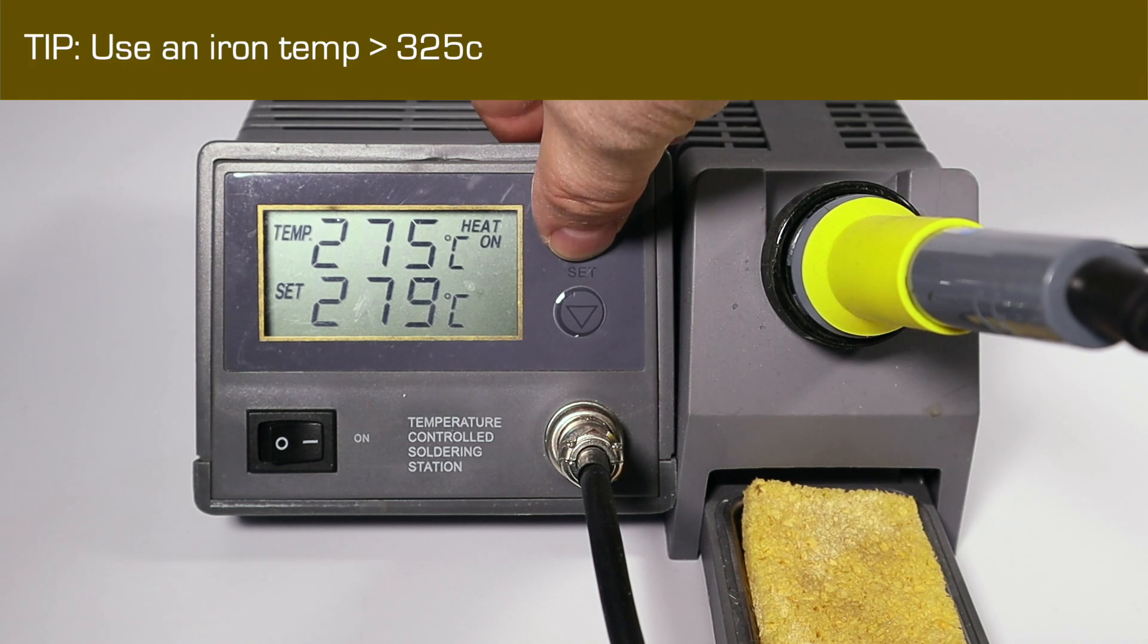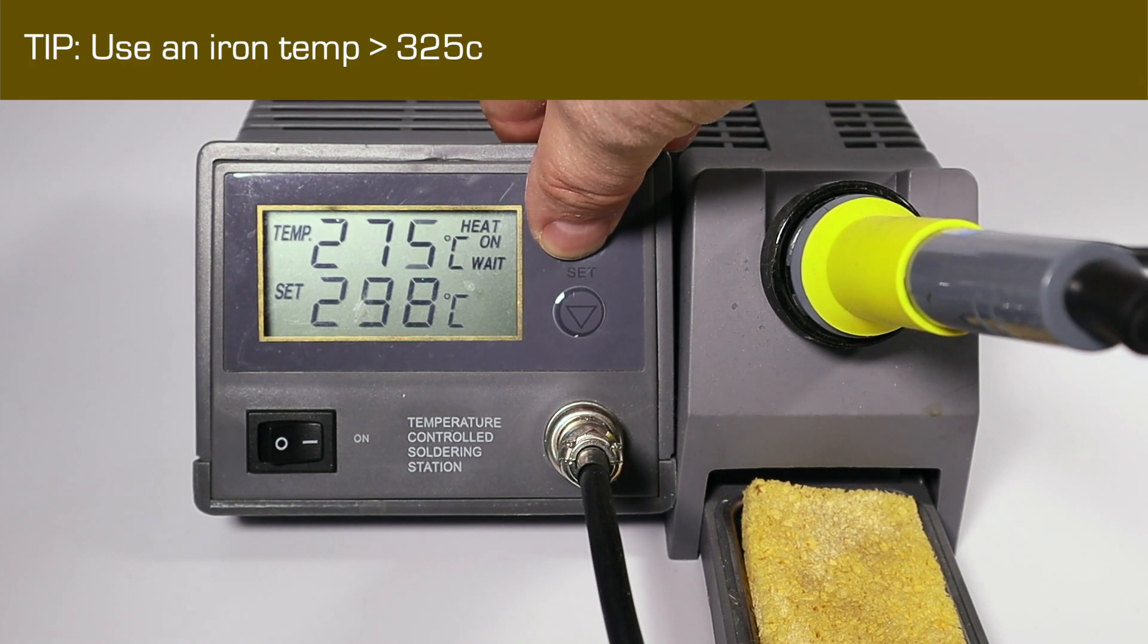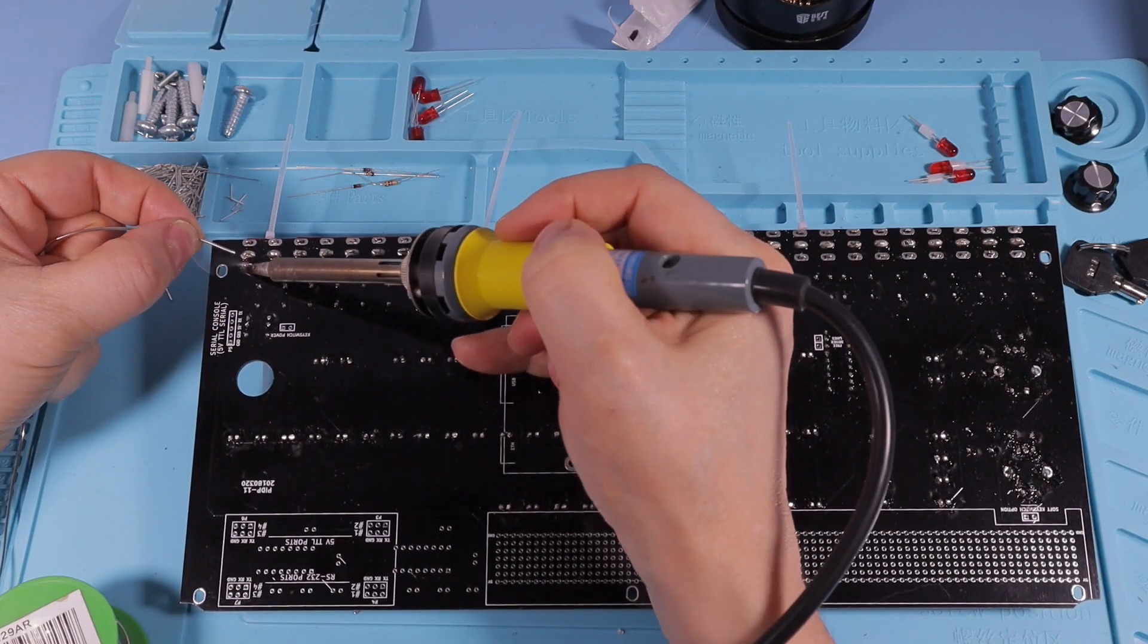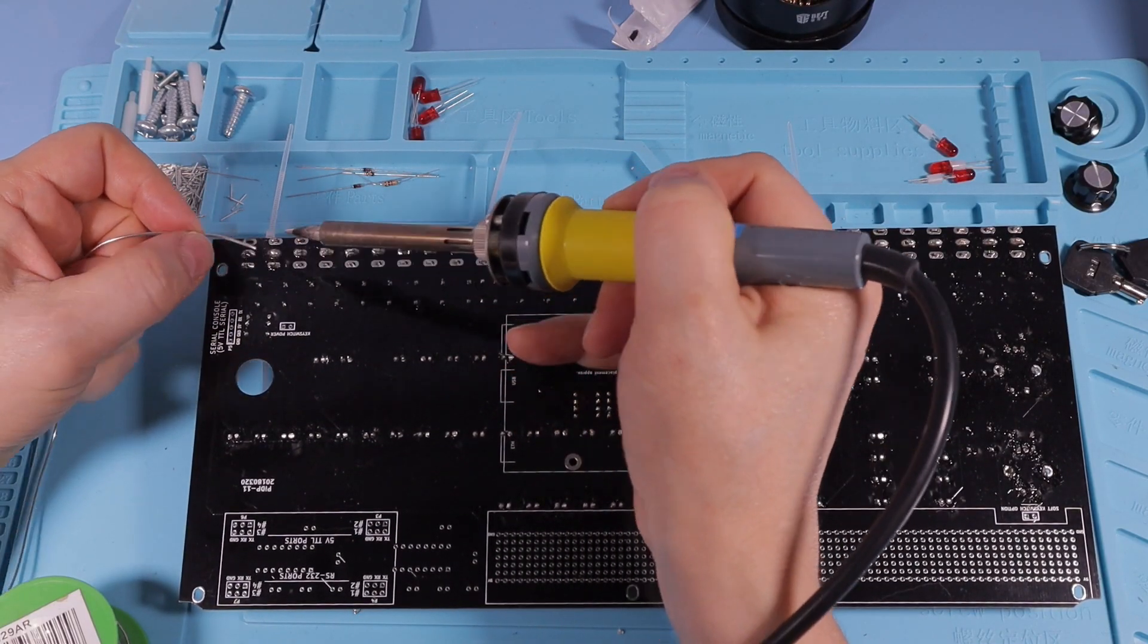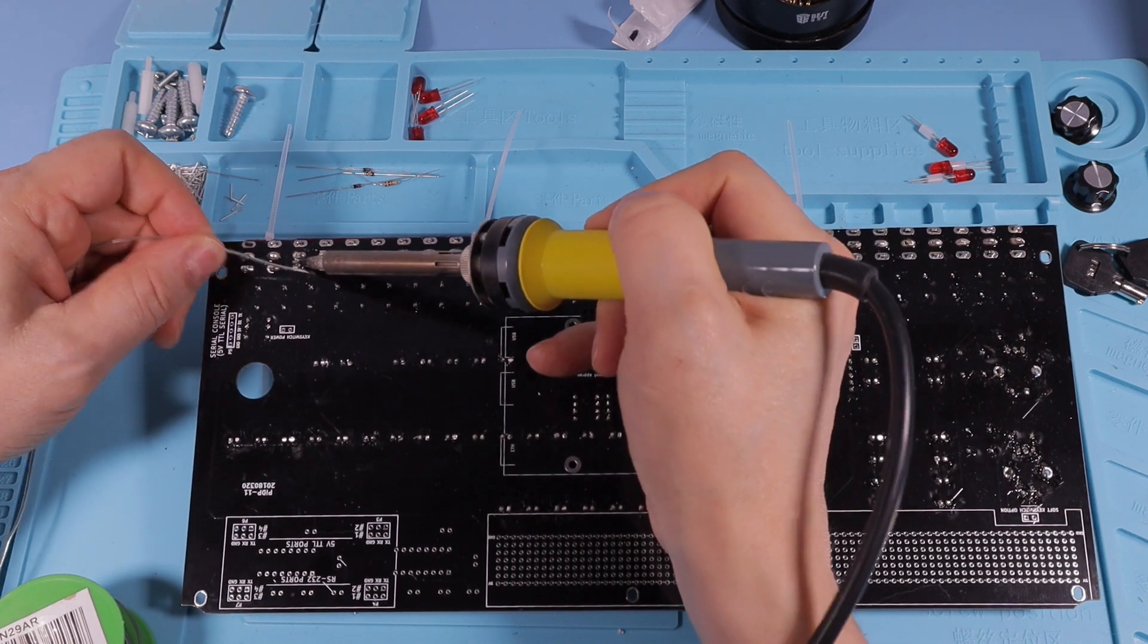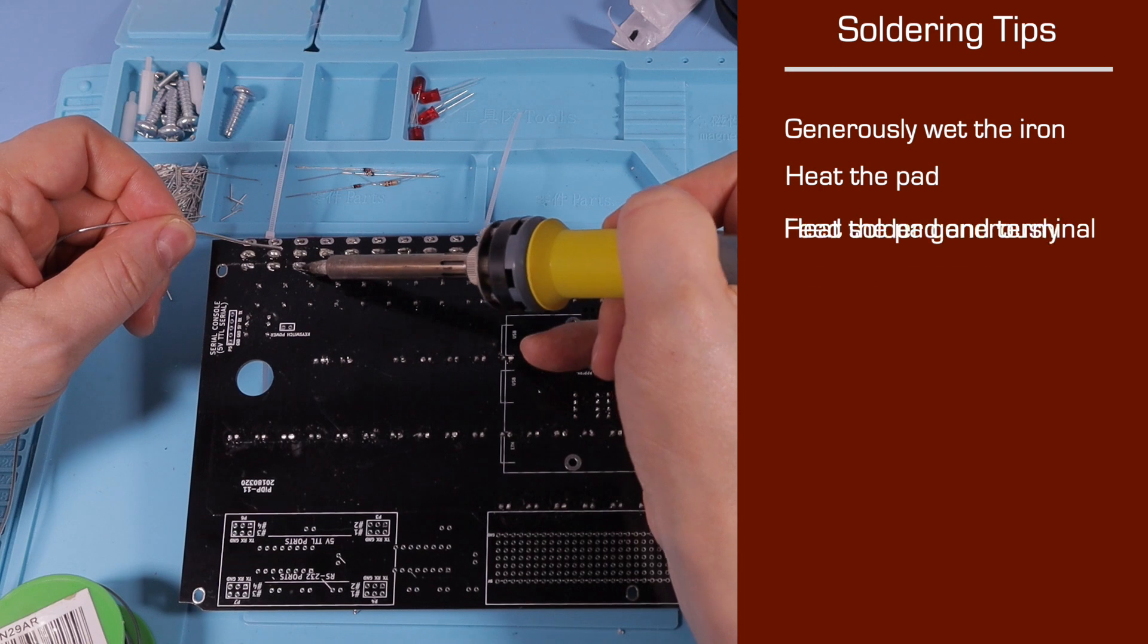Then I gave in and I cranked up the iron. I often run 375 or 400 degrees, and for this I only boosted it up to 320. But that helped a lot. Then I could concentrate on the actual technique. We're going to need to use a relatively large amount of solder on these pins.